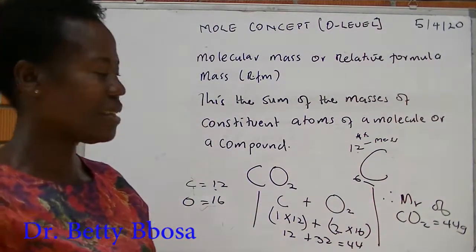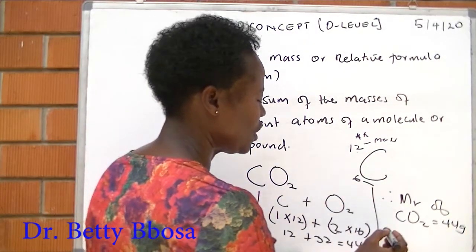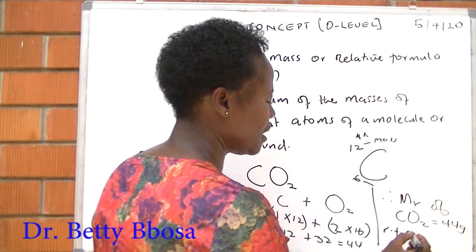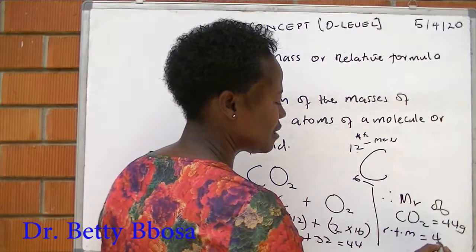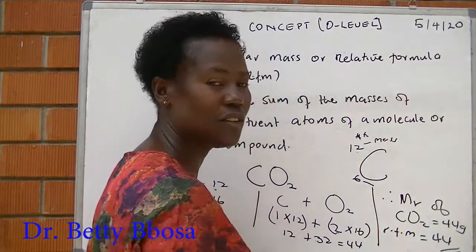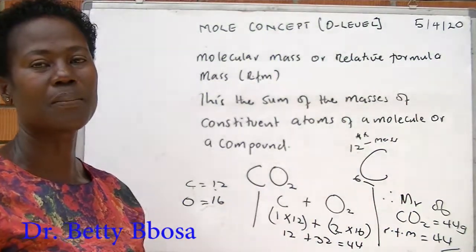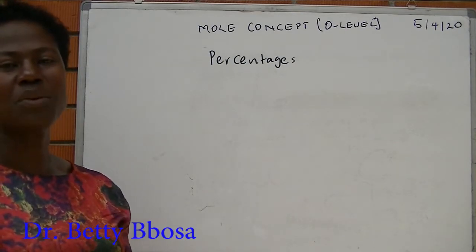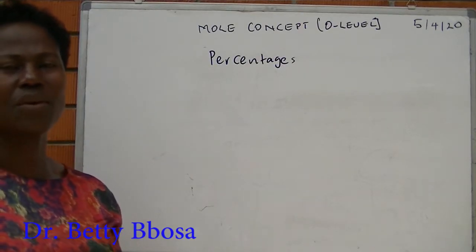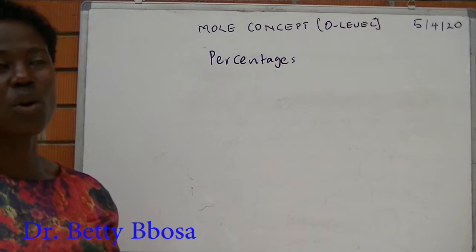When you talk of molecular mass, you put the units. But when you say RFM, you don't put the units, you just put 44. Why? Because it is relative to carbon. Now, having understood how to determine the molecular mass or the relative formula mass of a given compound, you can as well calculate the percentage of an atom in that compound.